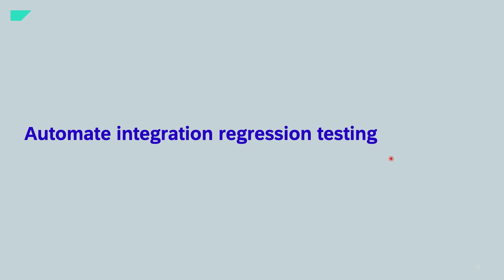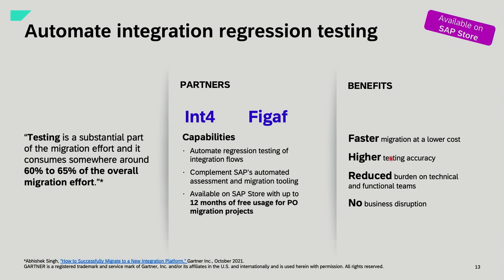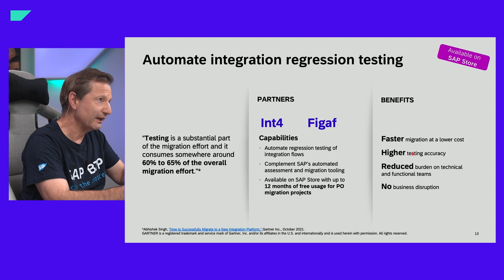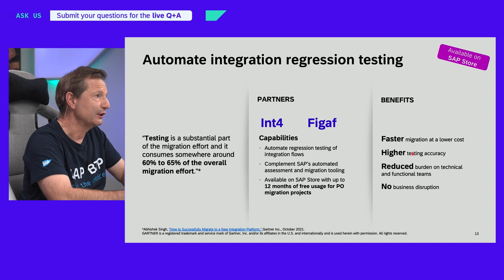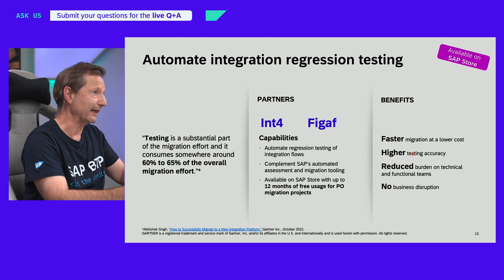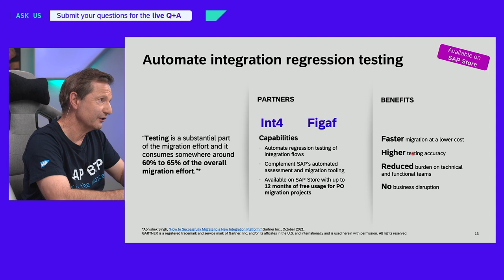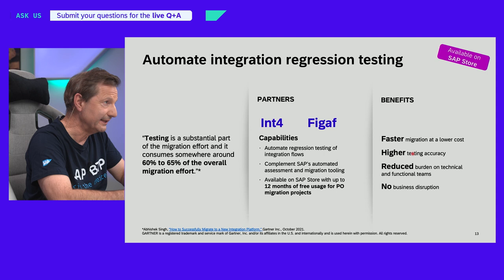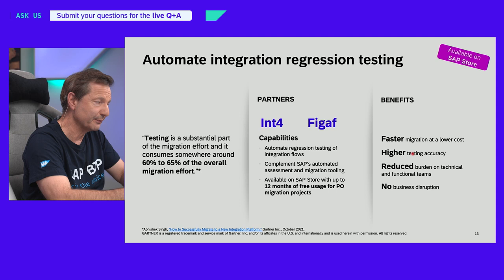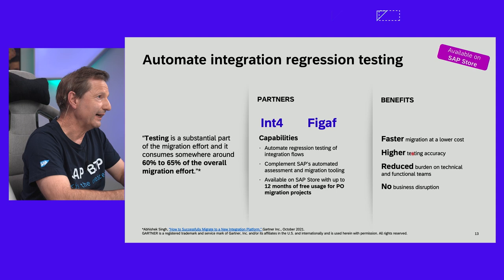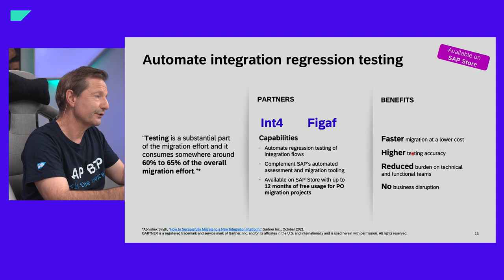Red scenarios mean certain features are not yet available and would require larger effort in the migration. For regression testing, we work closely together with two partners — INT4 and FIGAF — which provide their regression test tooling for free for SAP Process Orchestration customers for up to one year. You can find further information on SAP Store, where you can contact FIGAF or INT4. They provide tools and a framework for how you can test your scenarios after migration from SAP Process Orchestration to SAP Integration Suite.